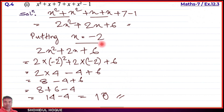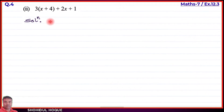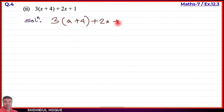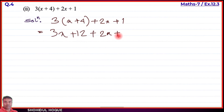Part number two: the expression is 3(x plus 4) plus 2x plus 1. First, expand the bracket: 3 multiplied by x gives 3x, 3 multiplied by 4 gives 12. Then plus 2x as it is, plus 1 as it is. So like terms: 3x plus 2x.